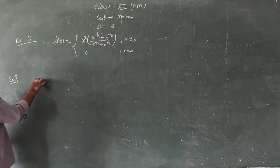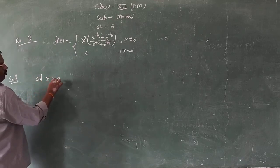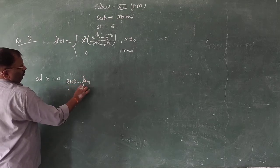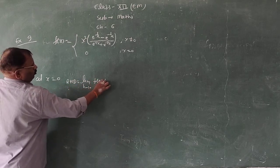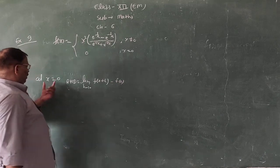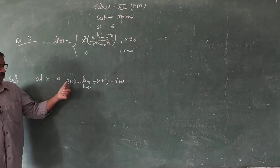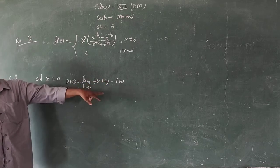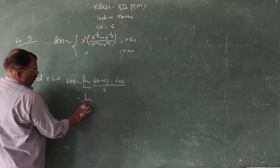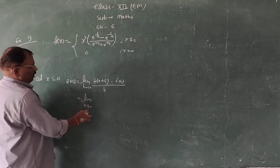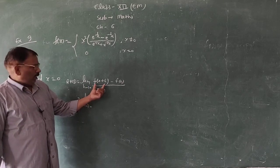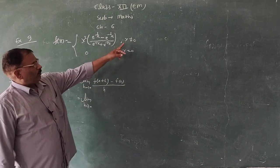Solution: At x equals 0, right-hand derivative equals limit h tends to 0, f(0+h) minus f(0) upon h. Here c equals 0, so we compute f(0+h). Since 0+h is not equal to 0, we use the formula for x not equal to 0. So we substitute x with 0+h in the given expression.